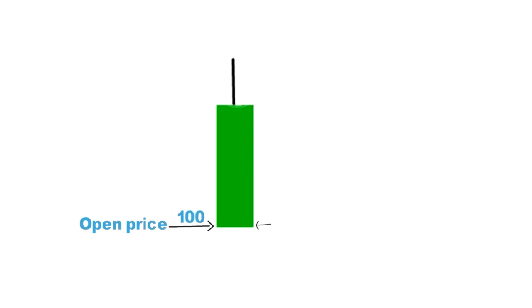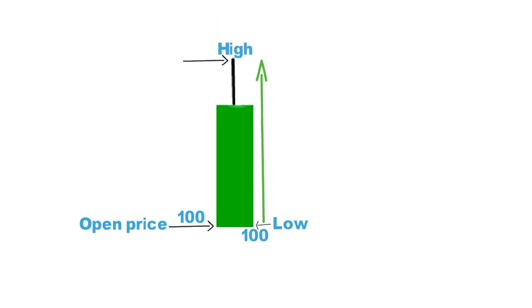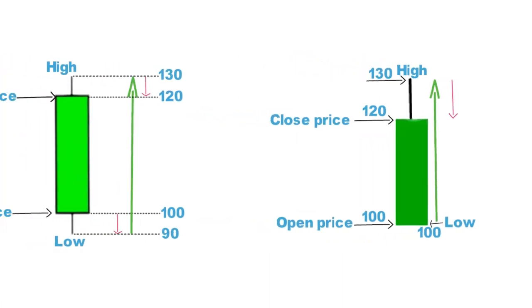Here the lower wick is missing because in this candle the low point is equal to the open point. In this candle, open price is 100 rupees, lowest price it touches is also 100 — highest it went off to 130, and closing price is 120.